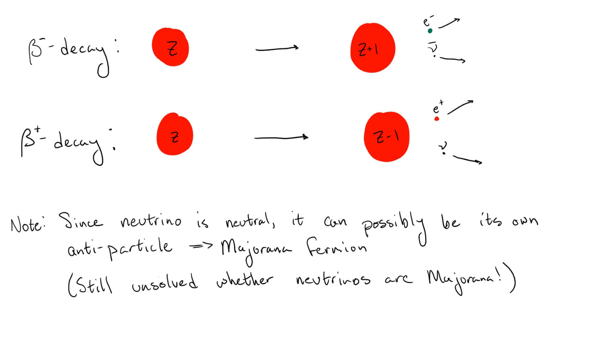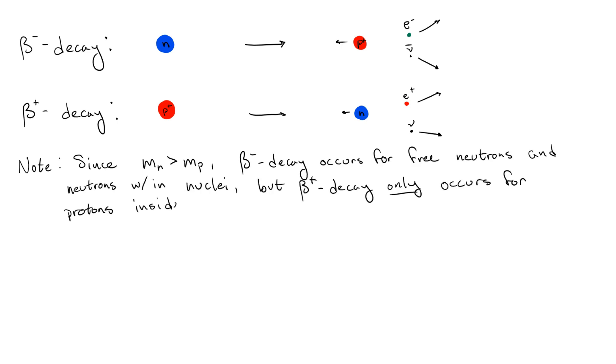A few years after Pauli's proposal, Fermi suggested that beta decay is caused by either protons or neutrons emitting positrons and neutrinos or electrons and antineutrinos respectively, converting the proton into a neutron or the neutron into a proton. Note that since neutrons are slightly more massive than protons, a free neutron will always decay into a proton, electron, and antineutrino, but a free proton will never decay into a neutron, positron, and neutrino. However, within a nucleus, a proton can decay in this way if the resulting nucleus as a whole is less massive than the original. If particles can decay in this way, variations of this interaction should also be possible if energetically allowed.